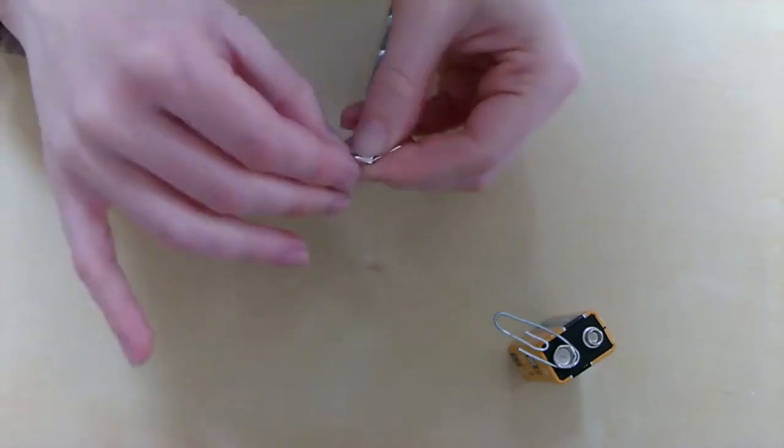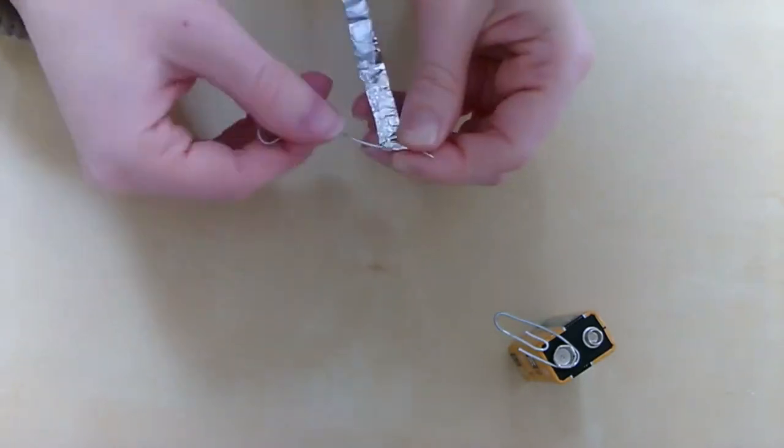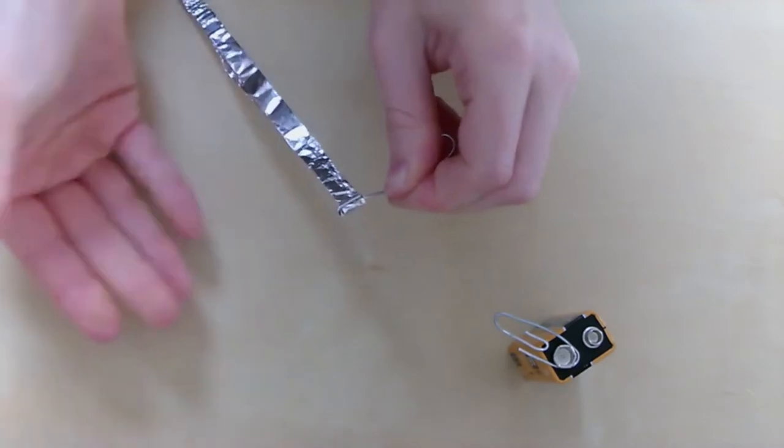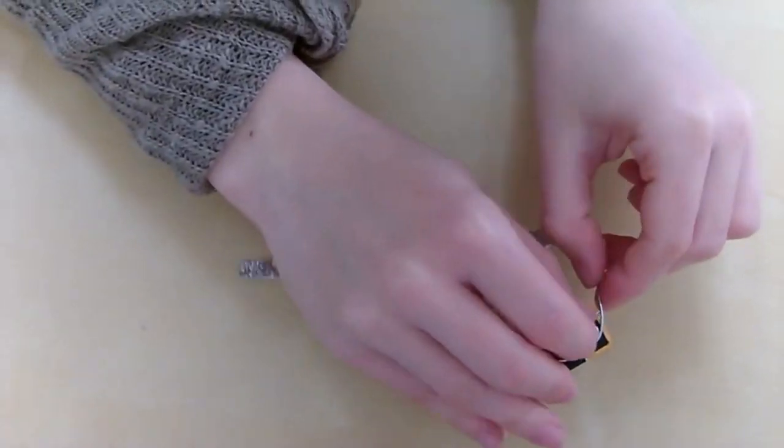You can then fold the paperclip over so it's securely attached. Do this to both paperclips, and we will almost have a full circuit.